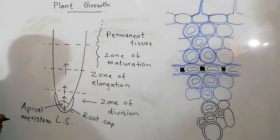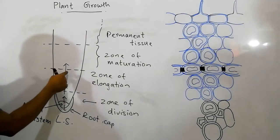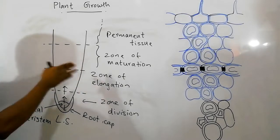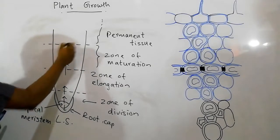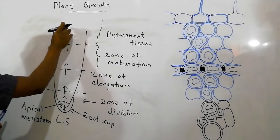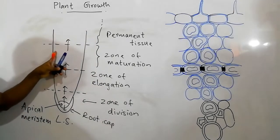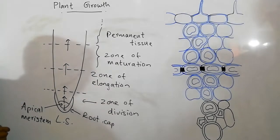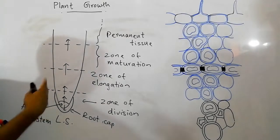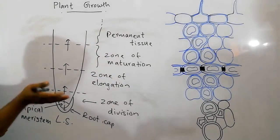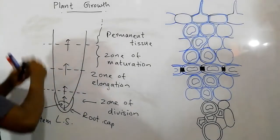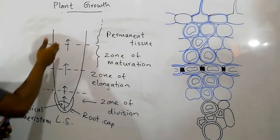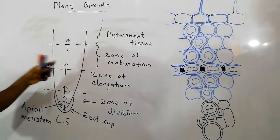In the zone of cell division, at the apex there is a root cap surrounding the apical meristem. The apical meristem contains initials that divide by mitosis and add new cells. New cells added towards the inner side are pushed towards the zone of elongation, where they are elongated. Those elongated cells are then added to the zone of maturation, where they differentiate and produce permanent tissues such as xylem, phloem, and parenchyma cells.